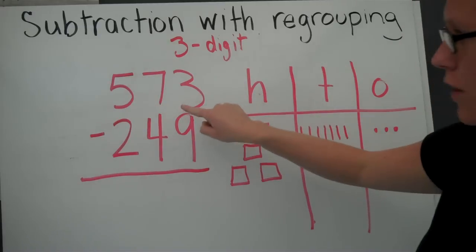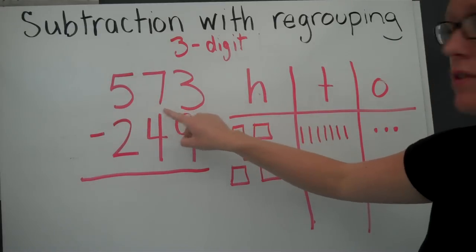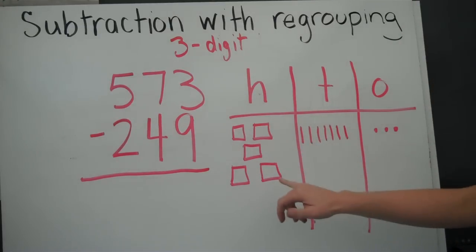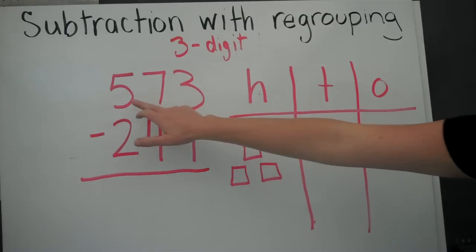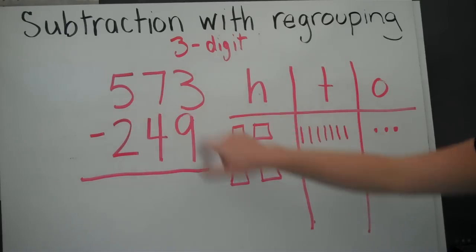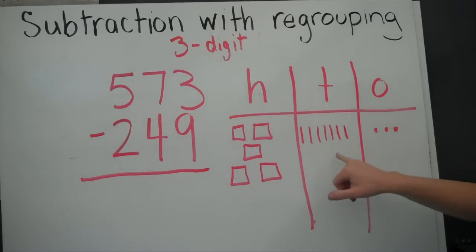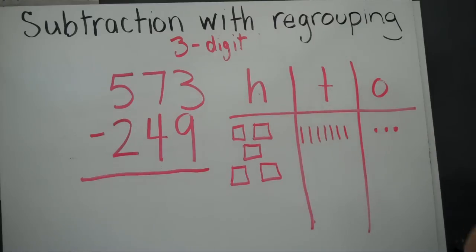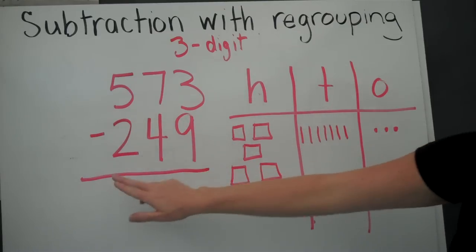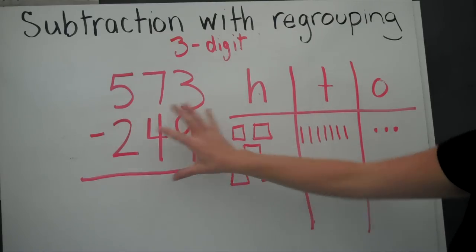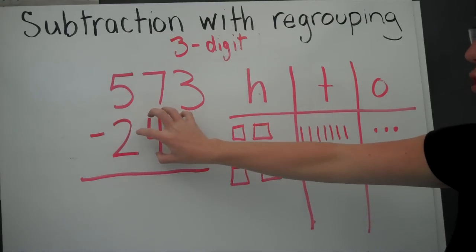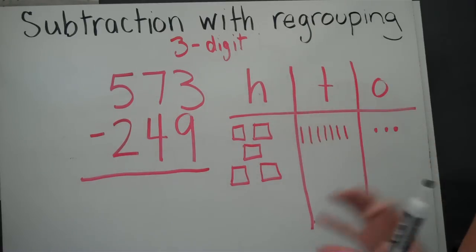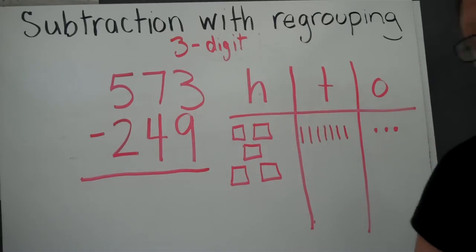So here's our total: 573. I went ahead and drew out our place value blocks — 500, 70, 73. Remember, I don't need to draw 249 because I'm taking 249 out of 573.